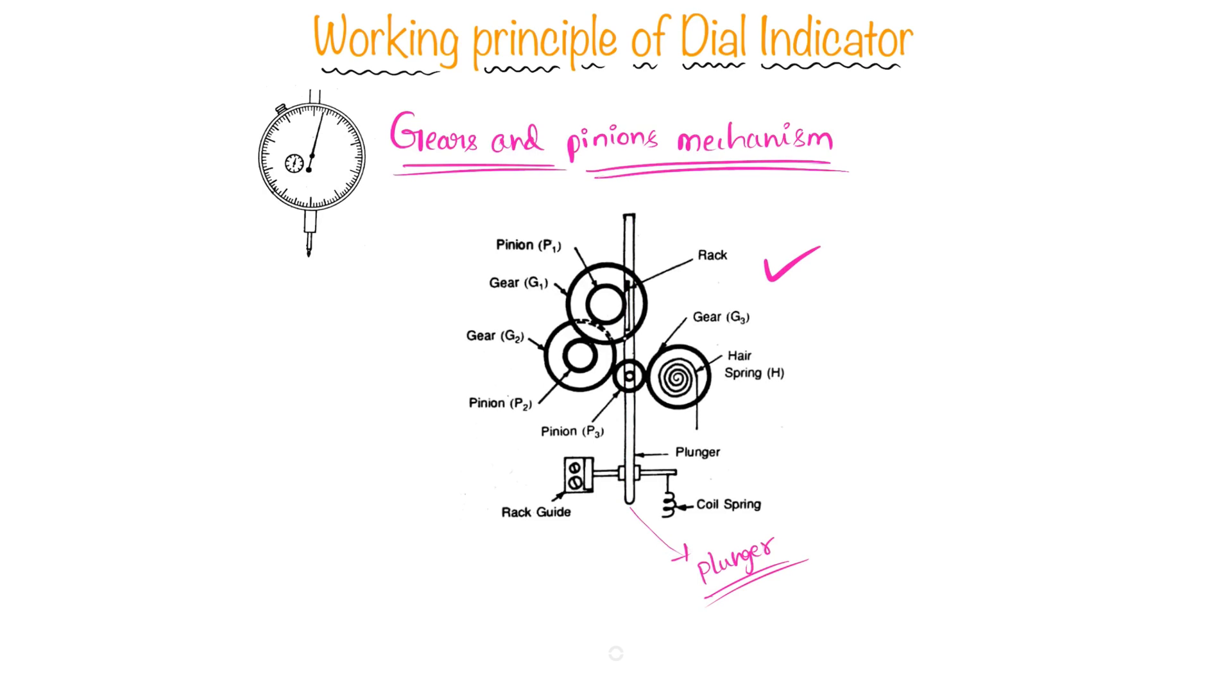The plunger is the one which is moving linearly with respect to the change in the workpiece while taking measurements. This linear movement of plunger will be converted into a rotational movement by providing a rack mechanism here which is meshed with the pinion P1, and this pinion gear is mounted on this gear 1.